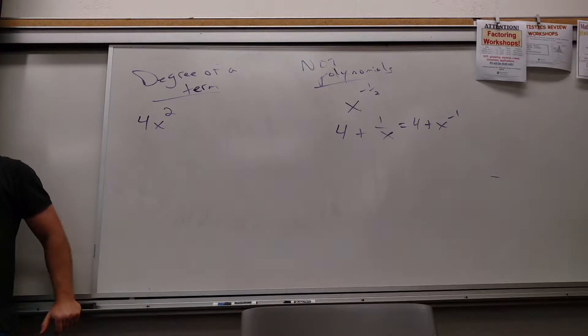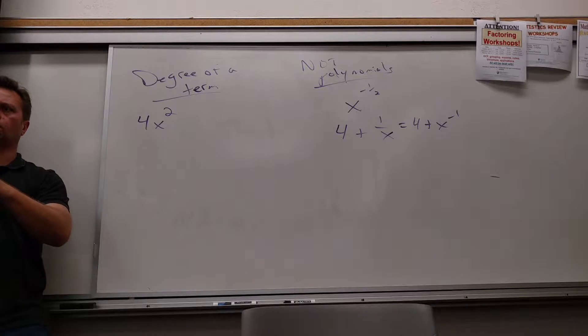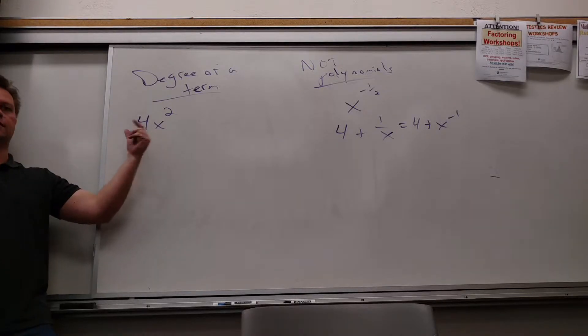The degree of a term is the total number of letters I see. So don't say one. There's an x, but how many x's are there? Two. There's two x's times a four. You guys see what I'm saying? So the degree of this term is, it's a second degree.